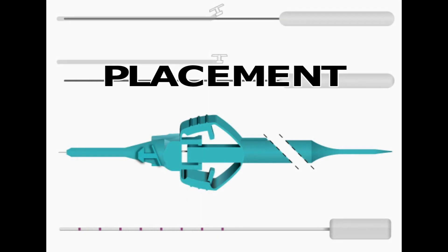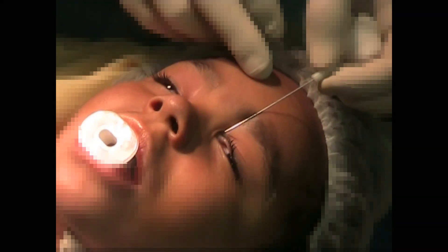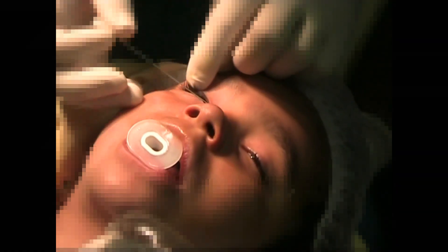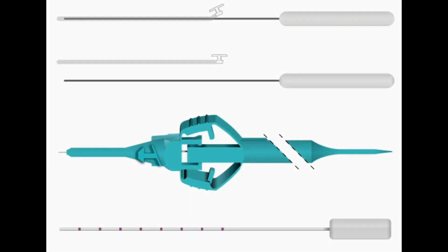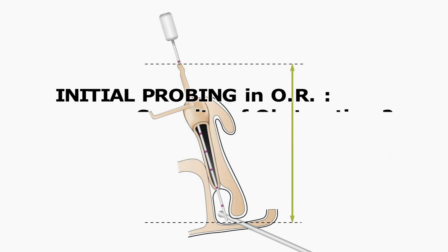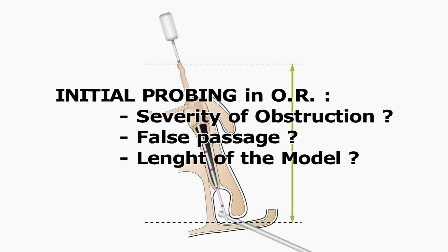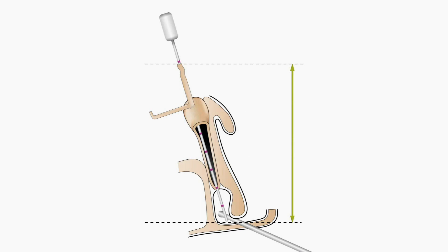Placement of the Master Ka requires two steps: an initial probing of the patient done in the operating room under general anesthesia in order to determine the severity of nasal lacrimal obstruction. If this is a simple mucosal type of obstruction, then a Master Ka intubation is done using a pushed method of insertion with the metallic guide. The preliminary lacrimal exploration with probing is essential, as it allows the surgeon to identify the location and severity of obstruction in order to avoid potential false passages and to choose the appropriate Master Ka length.